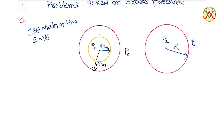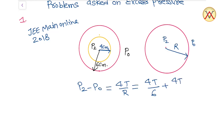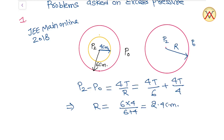We can say P2 minus P0 should equal 4T by r. Applying the concept to the first diagram, this equals 4T by 6 plus 4T by 4. From this we get r equals 6 into 4 upon 6 plus 4, which equals 2.4 cm. As you can see, the question is very simple and based on surface tension.